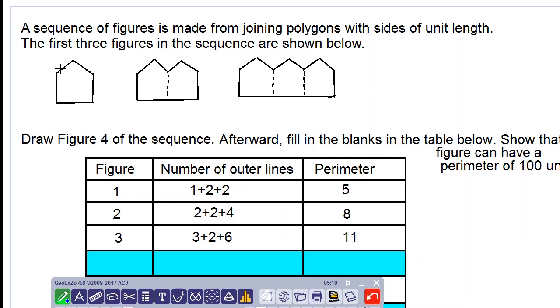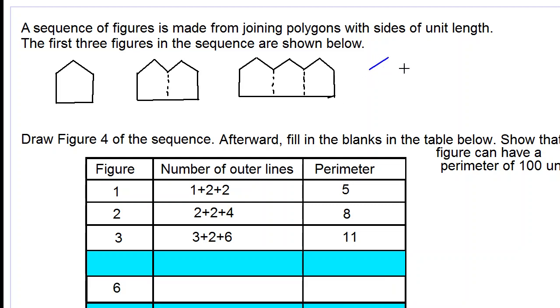So the first figure has one peak, the second one has two peaks, and the third one has three peaks. So we assume that the fourth figure would have four peaks, so we start with these four peaks.